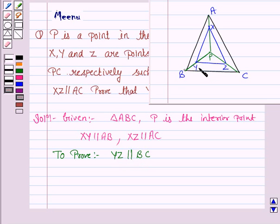Now, we have to prove that YZ is parallel to BC. For that, we will use the converse of the basic proportionality theorem which says that if the ratio BY upon YP is equal to CZ upon ZP, then YZ is parallel to BC.